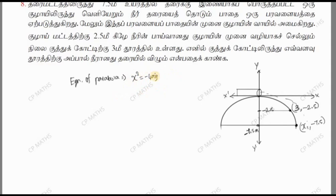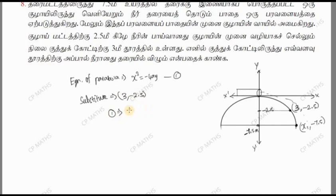This is the required parabola equation. For this point, we can substitute. So we substitute the point (3, minus 2.5) into the equation x² equals minus 4ay.